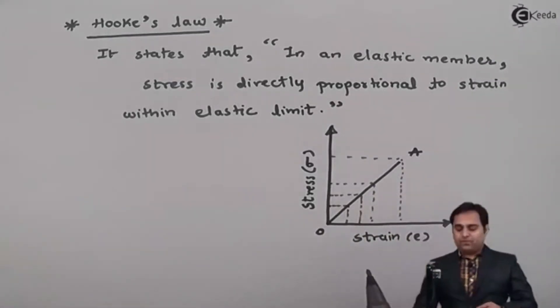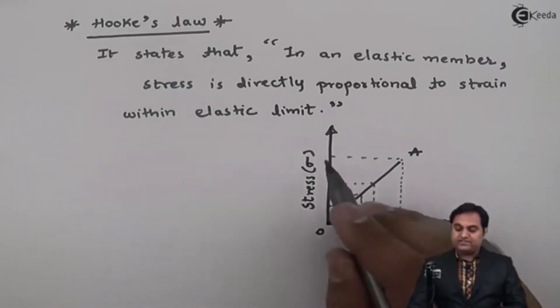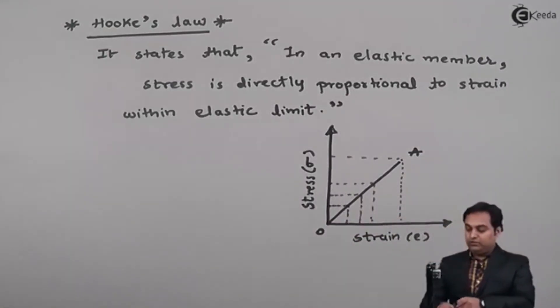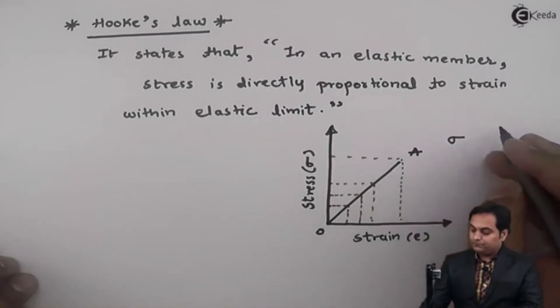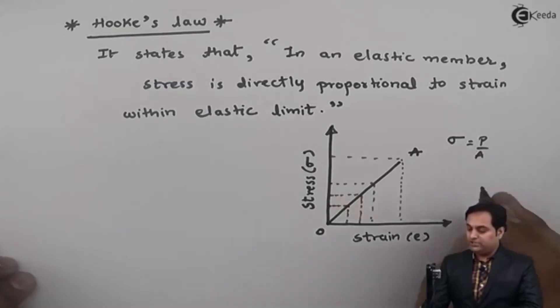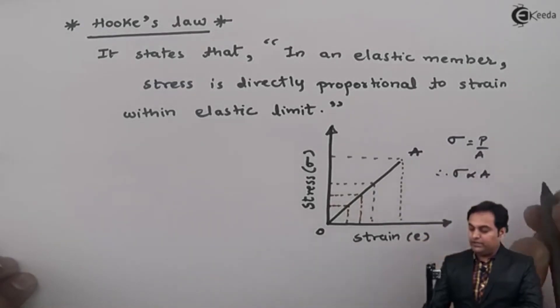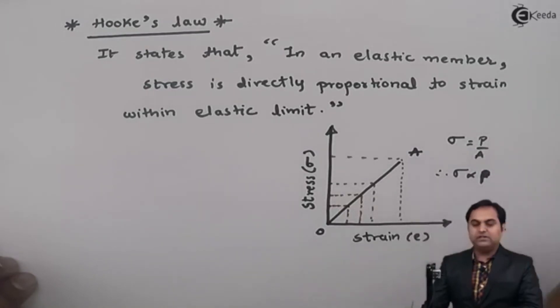So here when I am saying that stress is increased, in other words as stress is equal to P upon A, load upon cross sectional area. So therefore stress is directly proportional to load and inversely proportional to area.